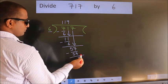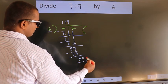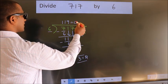No more numbers to bring it down. So we stop here. This is our remainder. This is our quotient.